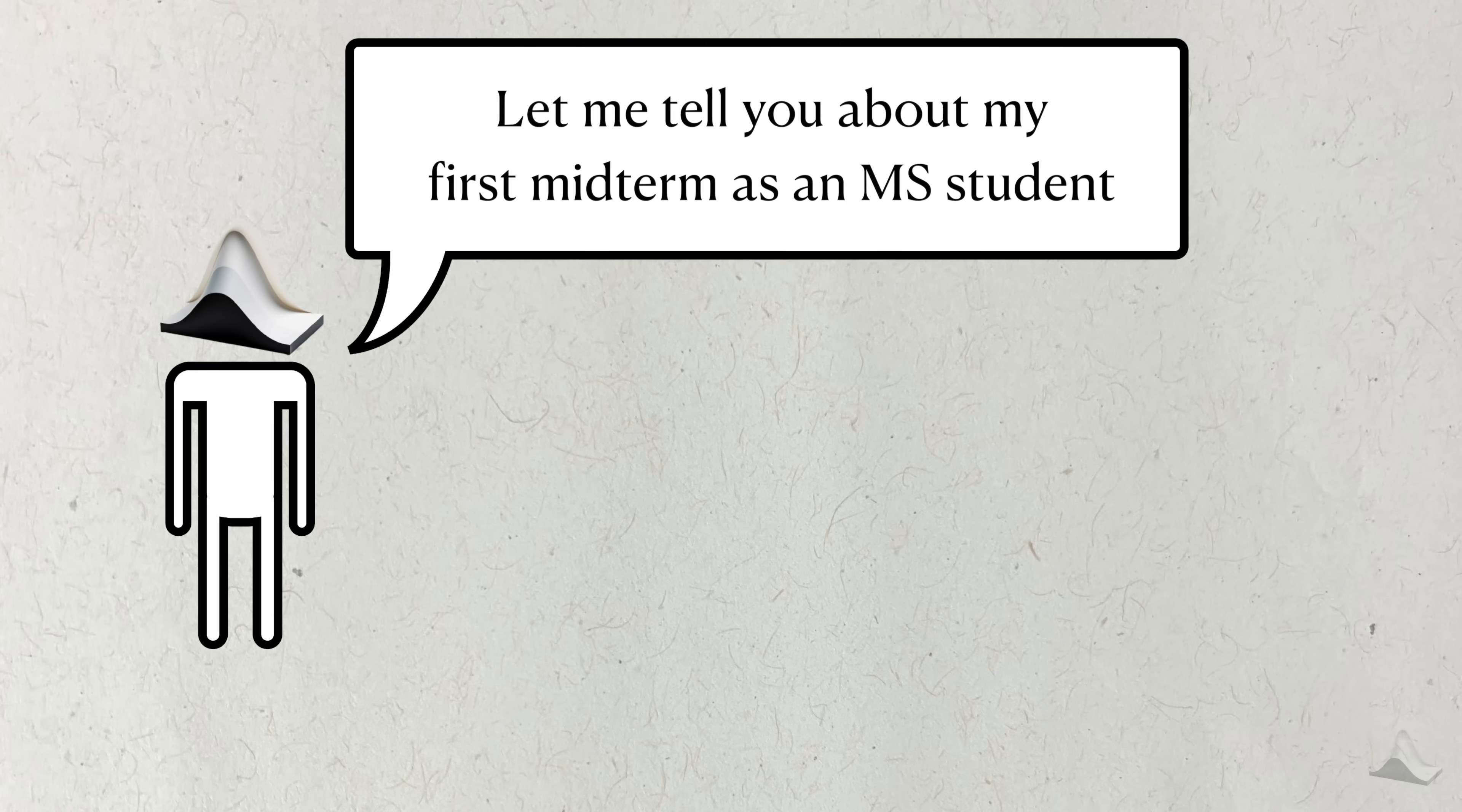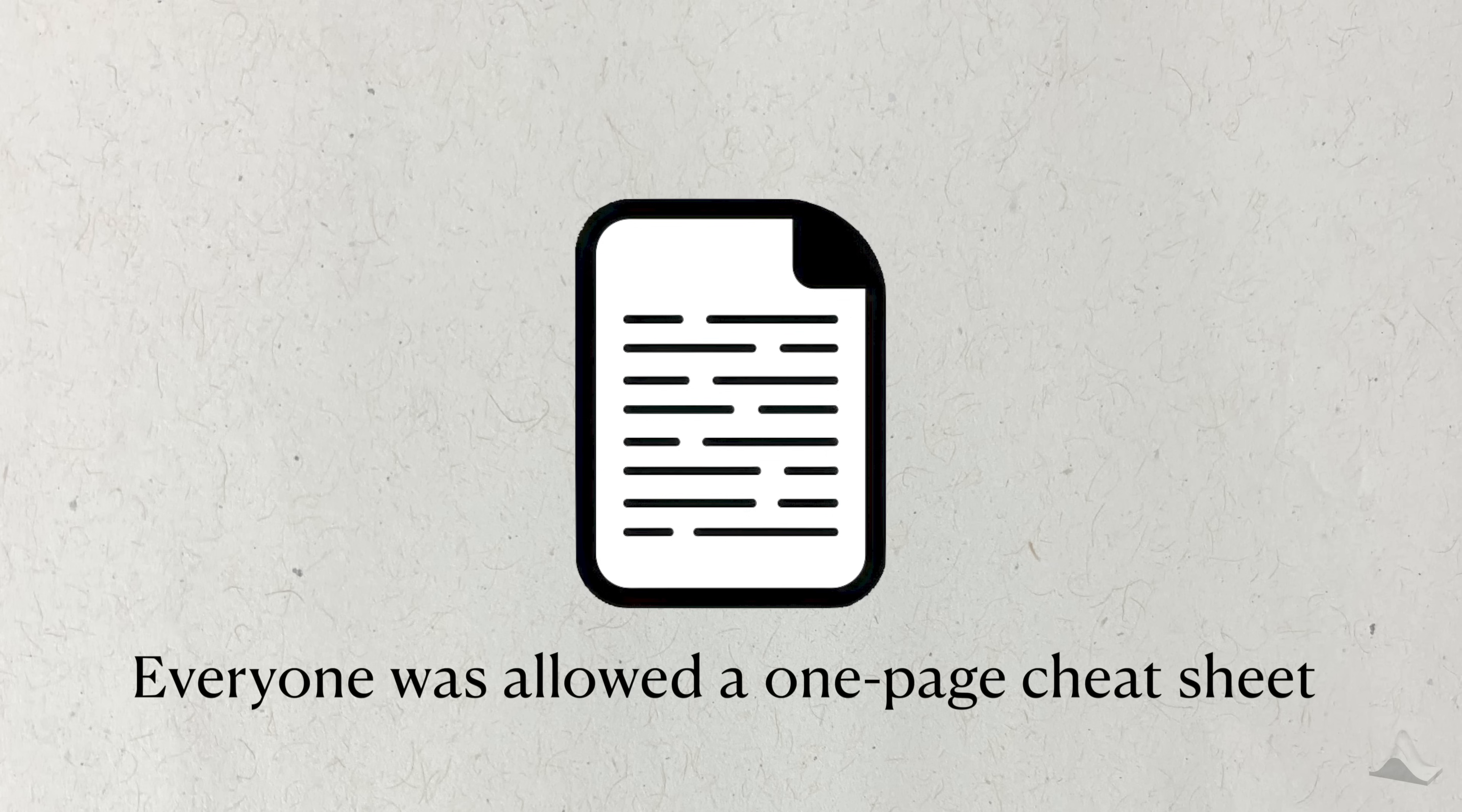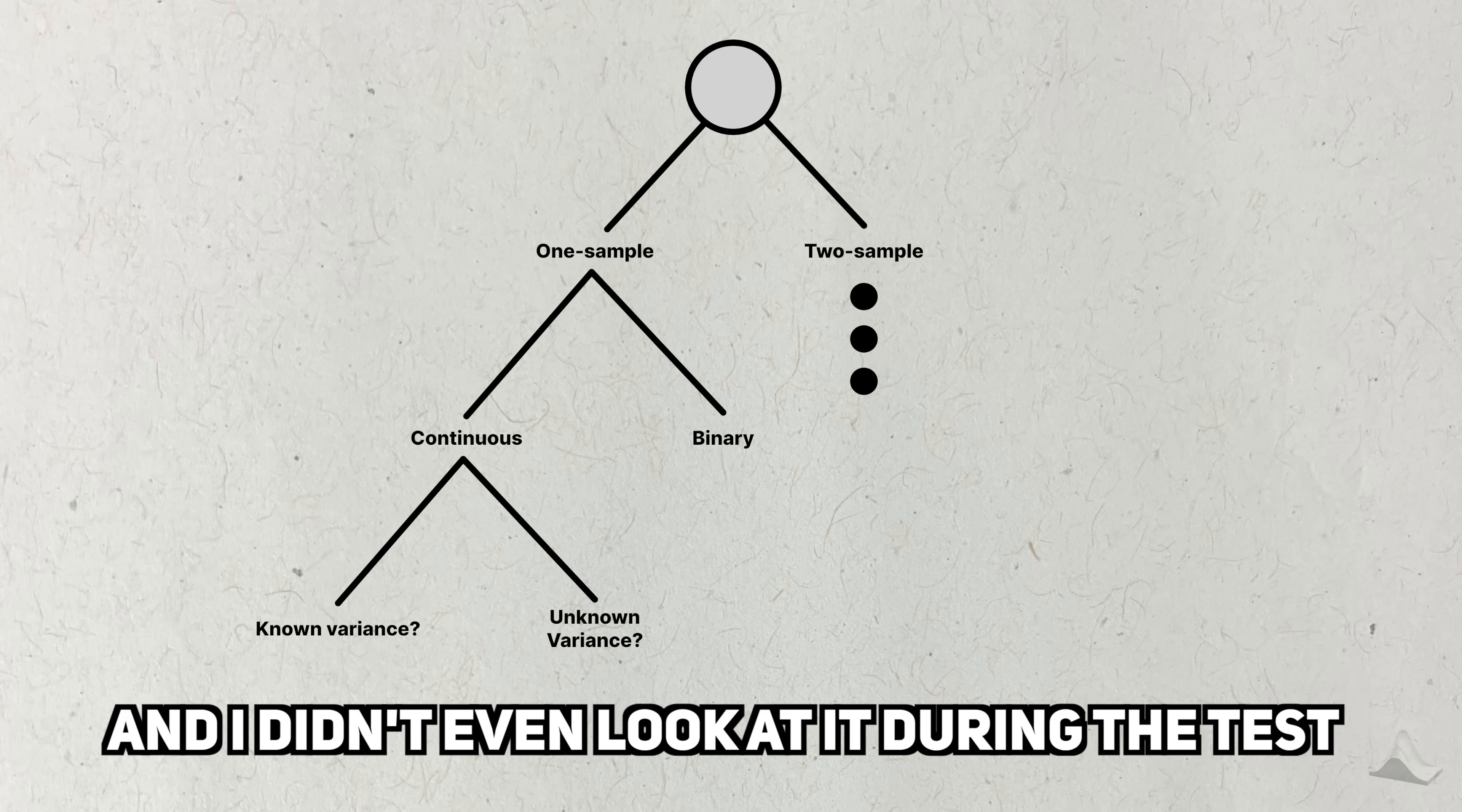Let me tell you about my first ever midterm as a master's student. My first biostatistics class was split into two halves. The first was for basic hypothesis tests, and the second was for linear regression. This midterm focused on the hypothesis tests. Everyone was allowed a one-page cheat sheet for the exam. I don't have a picture of mine anymore, but this is roughly what I put on it. I tried to fit all of my tests onto a decision tree, and everyone who saw it made fun of me. When I saw what other people had, I learned that other people take their cheat sheets really seriously. I spent so much time developing that chart, and honestly, I didn't even look at it once during the test.